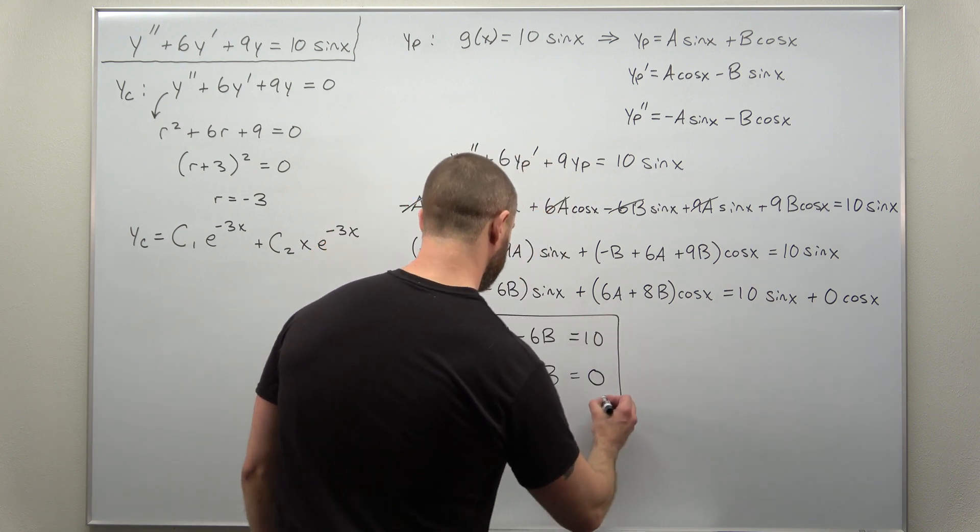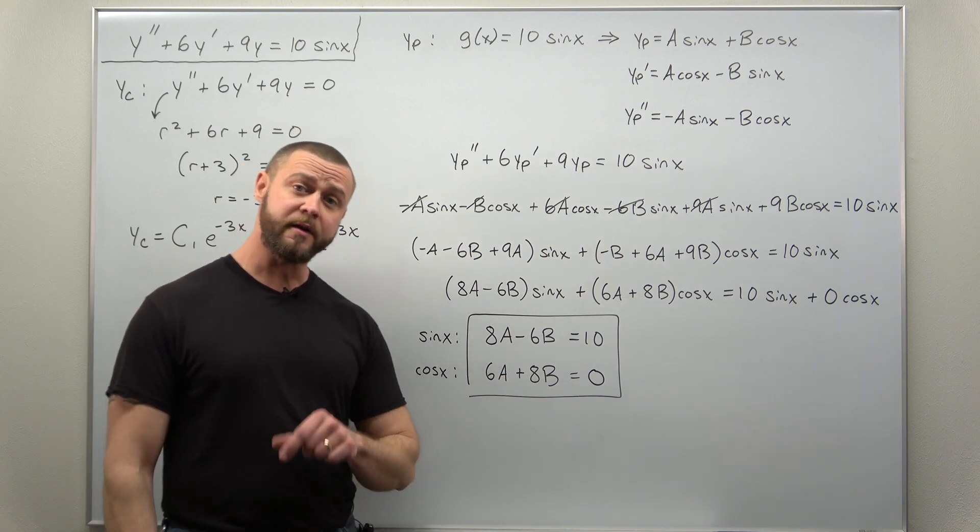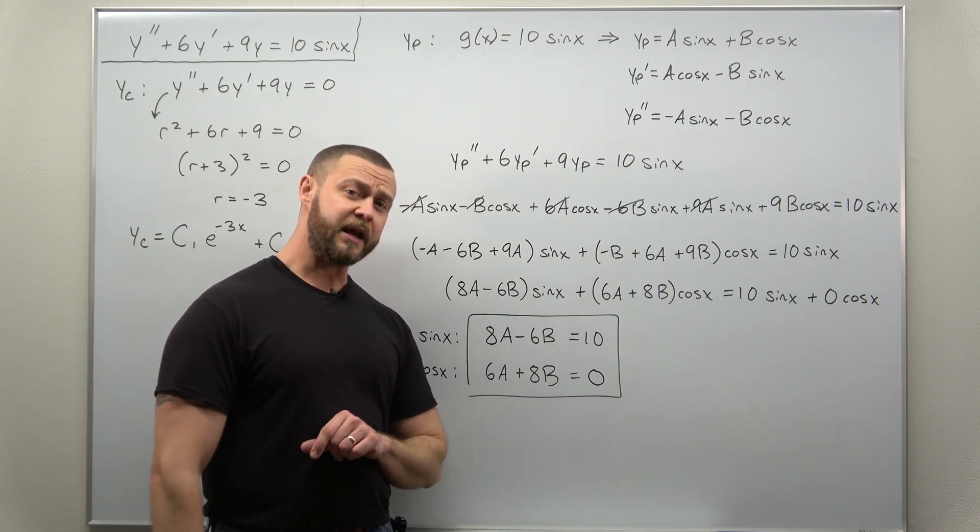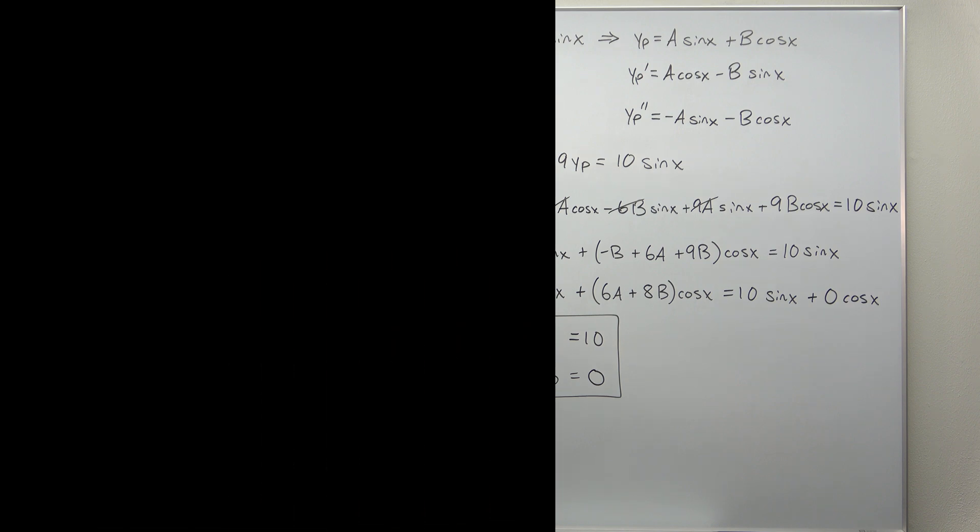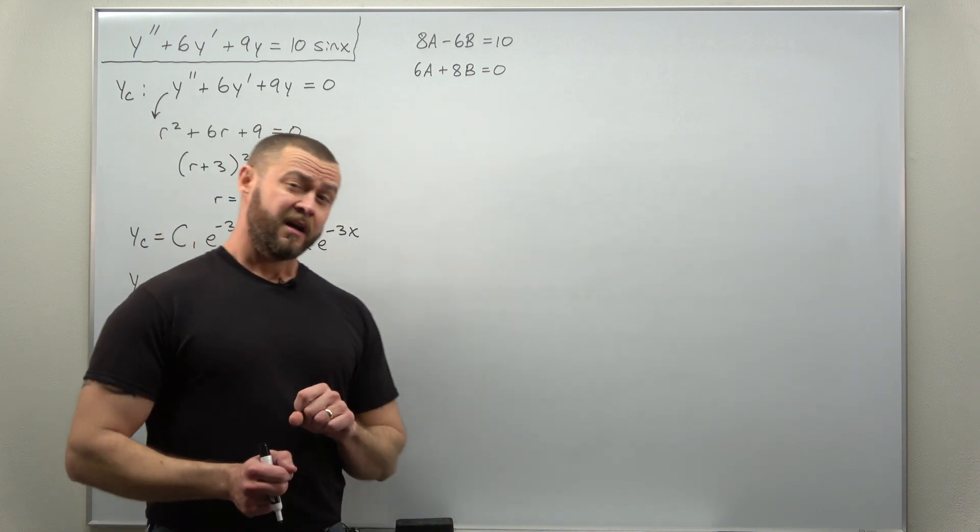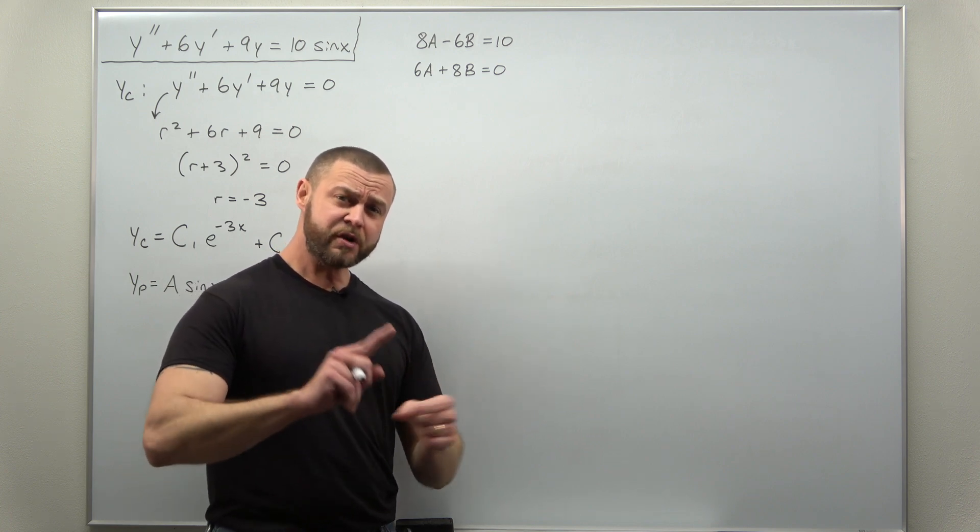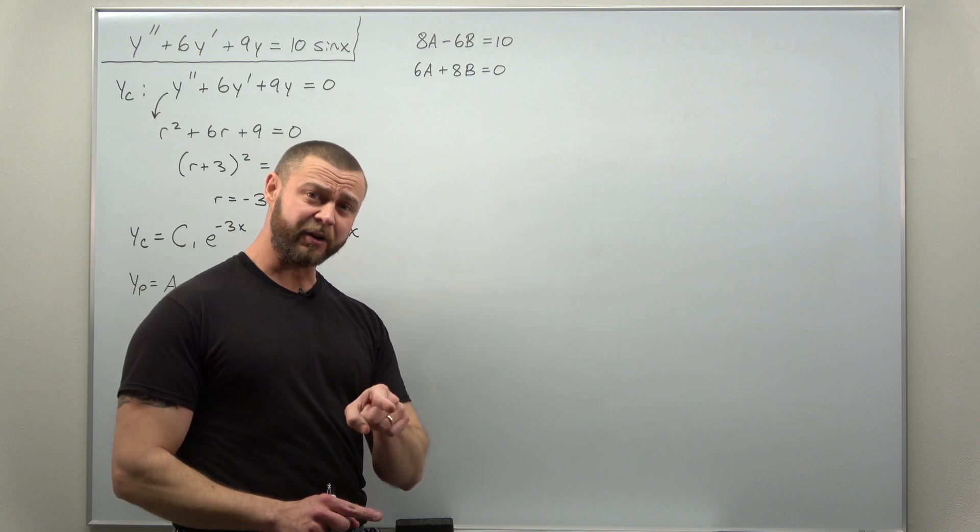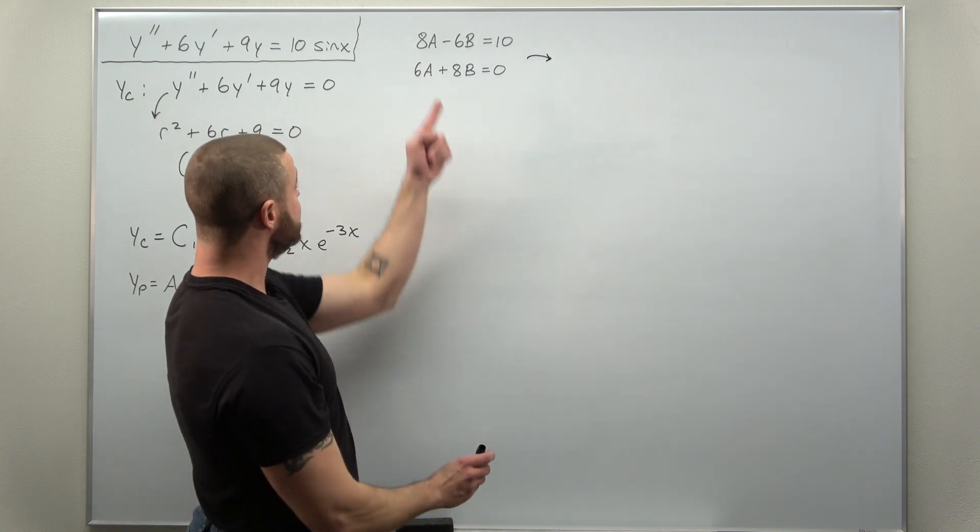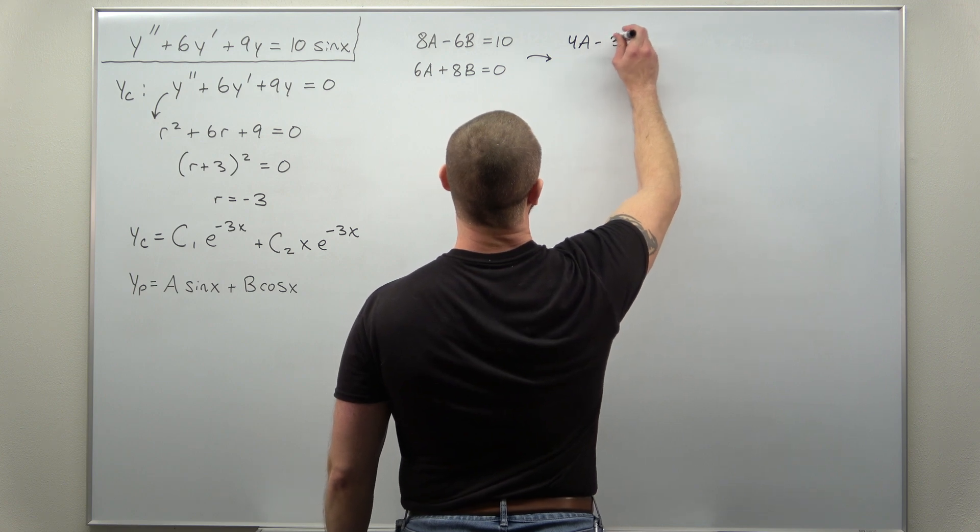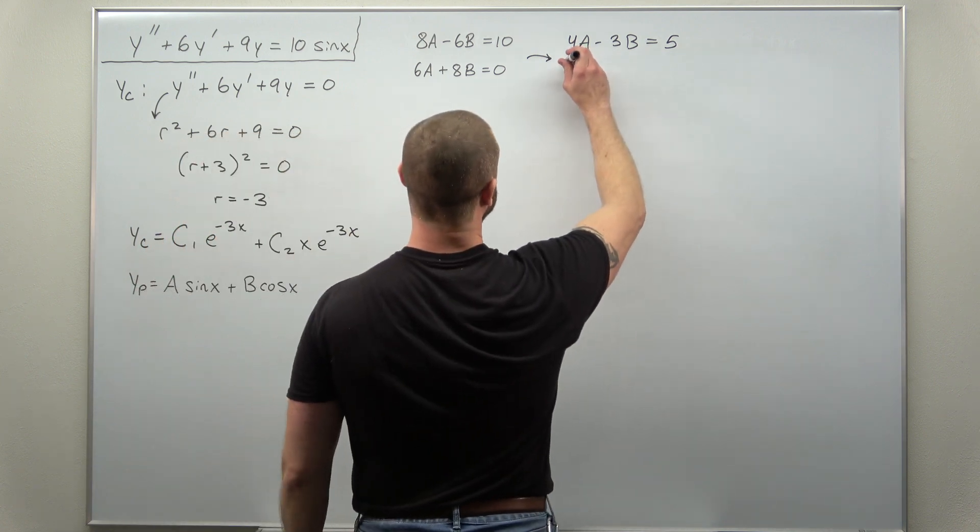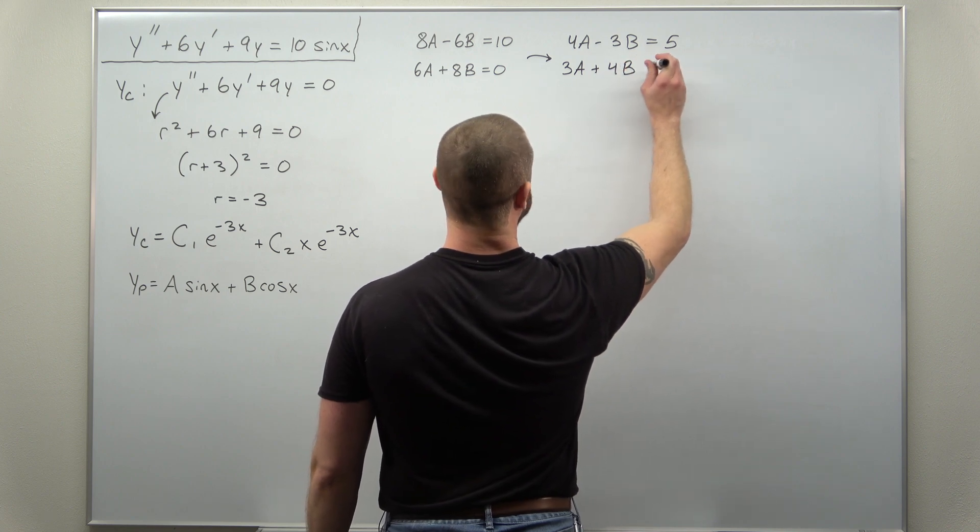So what we have here is a system of two equations for two unknowns, which we can solve pretty straightforwardly, either using substitution or elimination. Now we have our system of two equations to solve for a and b. The first thing I see is I can simplify it a little bit. I can divide everything by 2. Looks like we get 4a minus 3b equals 5. And you can divide the second equation by 2 as well. Looks like we get 3a plus 4b equals 0.